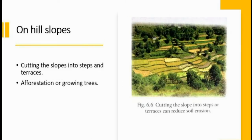On hill slopes, cutting the hill slopes into steps or terraces can reduce soil erosion. As you can see in the figure, steps slow down the flow of water. As the water flow slows down, some soil from one step is left on the next step, reducing the amount of soil lost. Afforestation — growing more trees — is another effective method of soil conservation on hill slopes, and people should be encouraged to plant more trees.